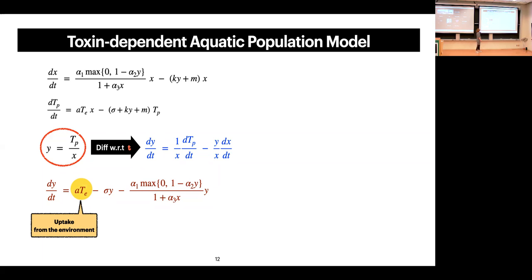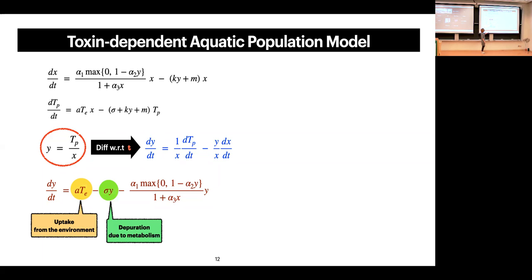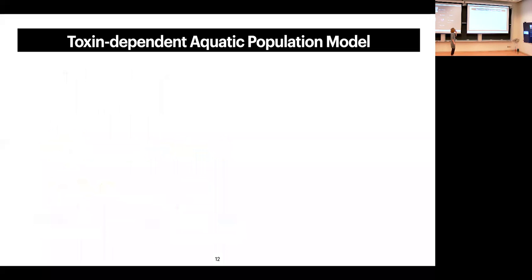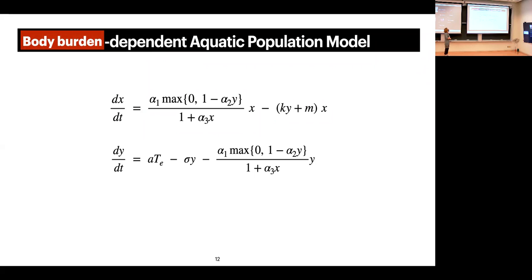In this equation, the first term describes uptake from the environment, the second term describes depuration due to metabolism, and the third term describes dilution due to birth and growth. Our model now becomes a body burden-dependent aquatic population model, and my talk will focus on this body burden-dependent formulation.